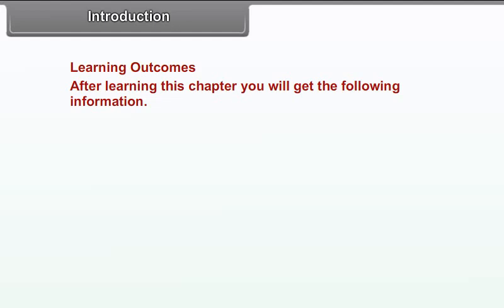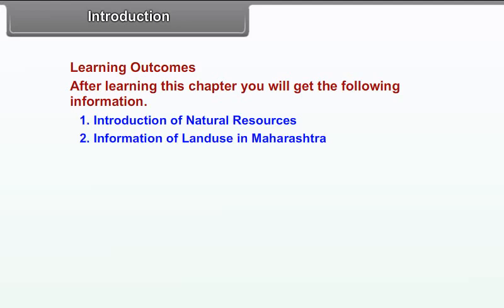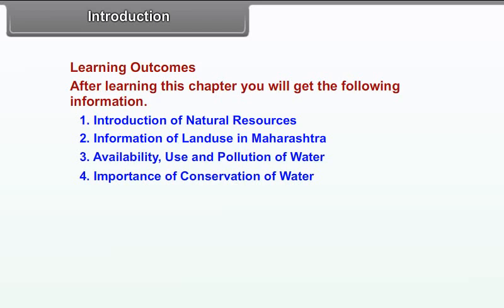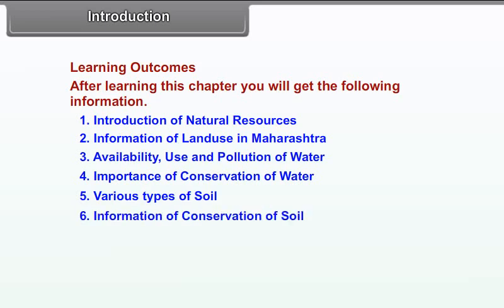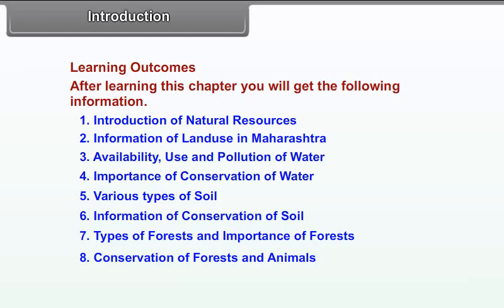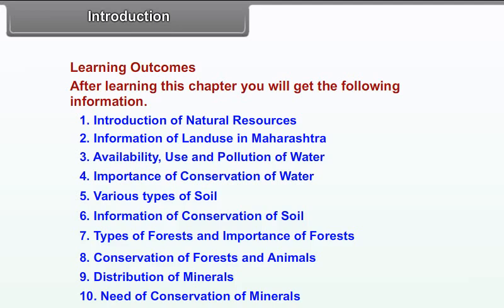Learning Outcomes: After learning this chapter, you will get the following information: 1. Introduction of Natural Resources, 2. Information of Land Use in Maharashtra, 3. Availability, Use and Pollution of Water, 4. Importance of Conservation of Water, 5. Various Types of Soil, 6. Information of Conservation of Soil, 7. Types of Forests and Importance of Forests, 8. Conservation of Forests and Animals, 9. Distribution of Minerals, 10. Need of Conservation of Minerals.